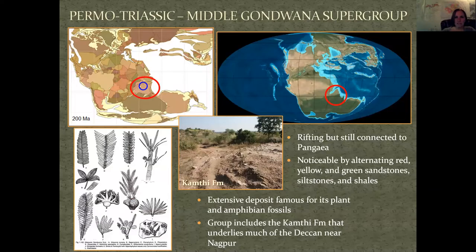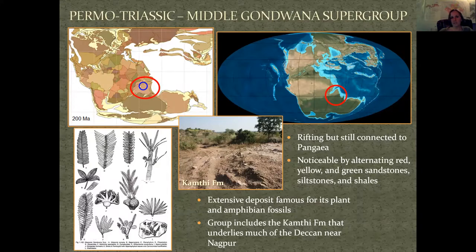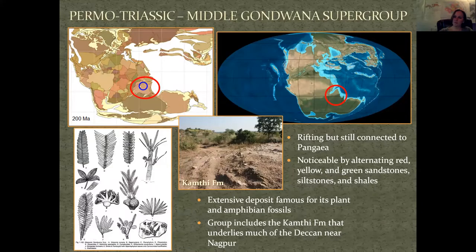We're going to start in the Triassic — a little bit of Permo-Triassic there. This is what we call the Gondwana Supergroup: a big collection of beds from when India was still connected to Gondwana, as you can see in these paleogeographic maps. One of the big things about Gondwana strata is that it's famous for its plant fossils. Also, one of the members of the Supergroup is the Comte Formation, which underlies the Deccan sequence where I was working. Most of it is sandstones, shales, and siltstones.